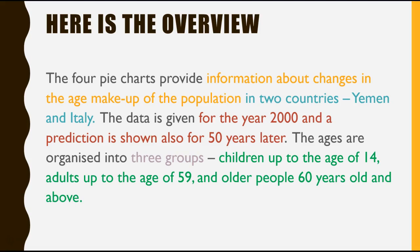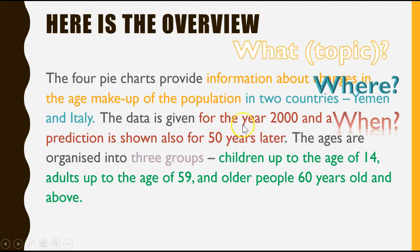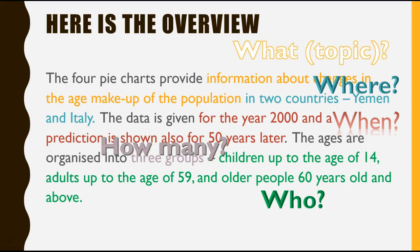So let's go back to this overview. You can ask yourself, what is the topic of the charts? It's to provide information about changes in the age makeup of the population — that is the topic, or the what. Then you can ask yourself where? In two countries, Yemen and Italy. What about when? The year 2000 and a prediction for 50 years later. What about who? And finally, three groups — you should ask yourself how many. Hopefully, when you're in the middle of the test, you won't miss anything.